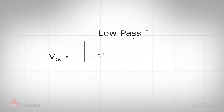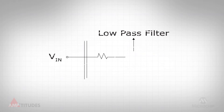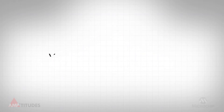It should also be noted that all amplifiers inherently have some level of high-frequency rejection. The input impedance and parasitic capacitance on the inputs form a low-pass filter function. But is this level of EMI rejection enough? What else can be done to minimize the adverse effects of EMI?